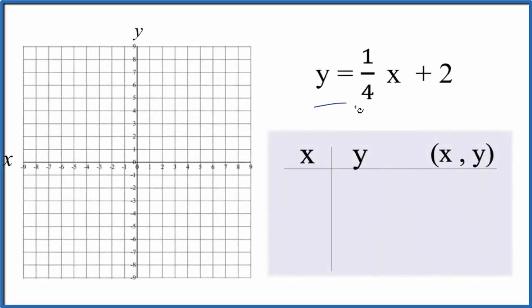Let's graph the linear equation y equals 1/4x plus 2, and we're gonna do this two ways. First, we'll use a table of values to draw the graph, and then we'll use slope-intercept formula y equals mx plus b to check our work.